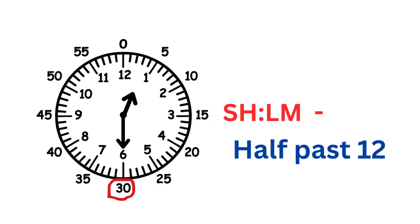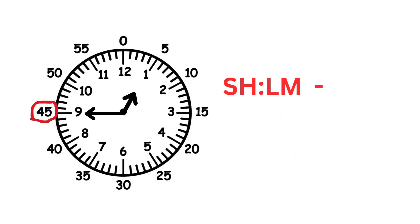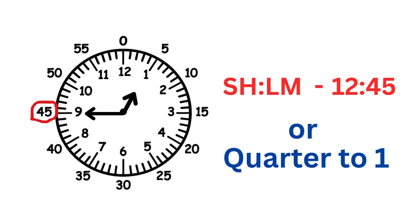The long hand is on 6, that equals 30 minutes, so the time is 12:30 — or we can say half past 12. The long hand is on 9, that's 45 minutes. The time is 12:45, or we can also say quarter to 1.